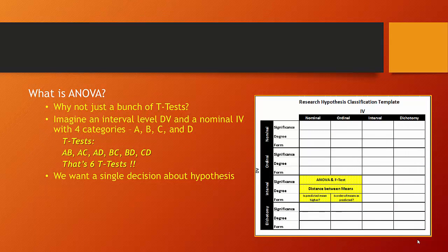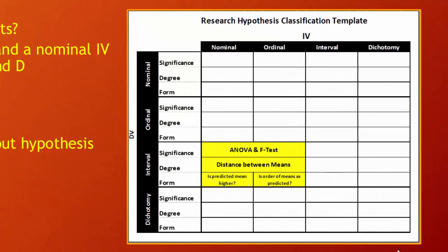Why not just do a bunch of t-tests? Imagine you were doing a comparison between two categories of an independent variable, and you're just comparing two means — how far apart is one mean from another mean. But when you have multiple categories of an independent variable, whether nominal or ordinal, you could imagine that every time you wanted to do a comparison of means, you'd have to compare each category of each mean.